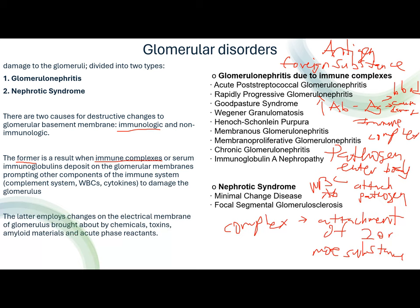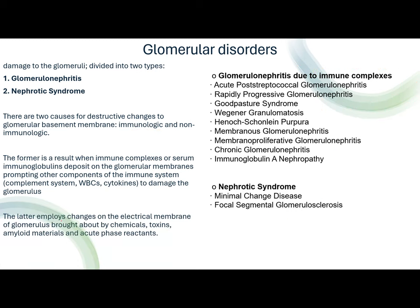The non-immunologic cause would deploy changes on the electrical membrane of the glomerulus brought about by chemicals, toxins, amyloid material, and acute phase reactants. These are substances that do not involve the immune system. For example, you could ingest toxins — if you are an alcoholic and keep ingesting alcohol, or were poisoned with lead — those could cause non-immunologic changes.